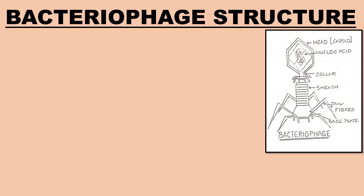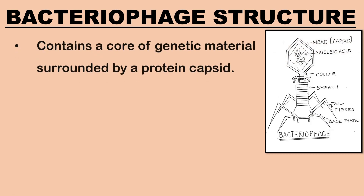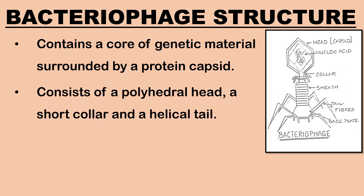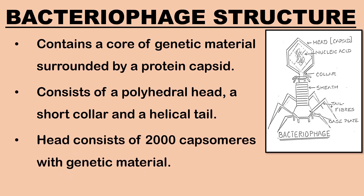Next, let us study the structure of bacteriophage. A bacteriophage consists of a core of nuclear or genetic material surrounded by a protein capsid. It consists of a polyhedral head, a short collar, and a helical tail. The head consists of 2,000 capsomeres with the genetic material enclosed in it.